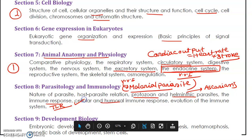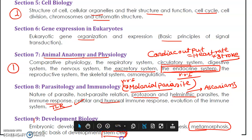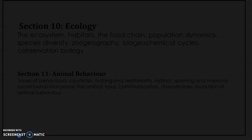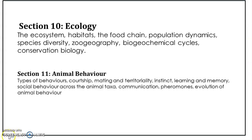For developmental biology, only metamorphosis is important — study retrogressive and progressive metamorphosis, and insect metamorphosis. For stem cells, just cover the basics; that is sufficient.